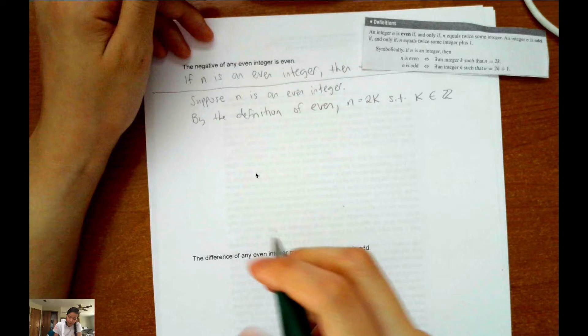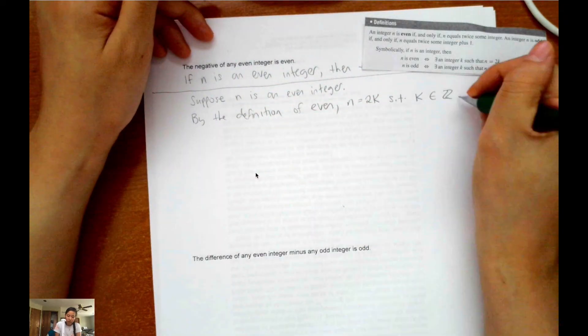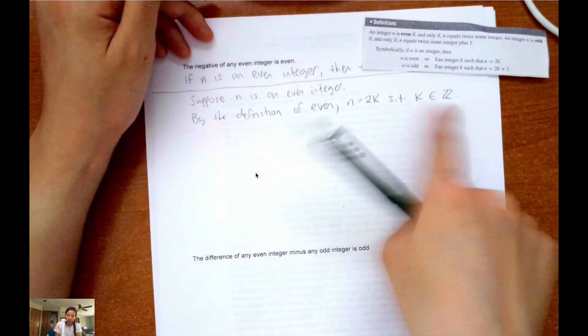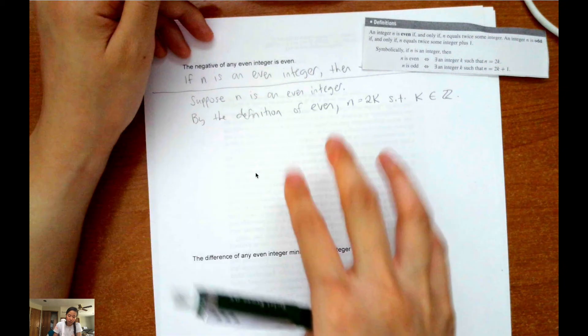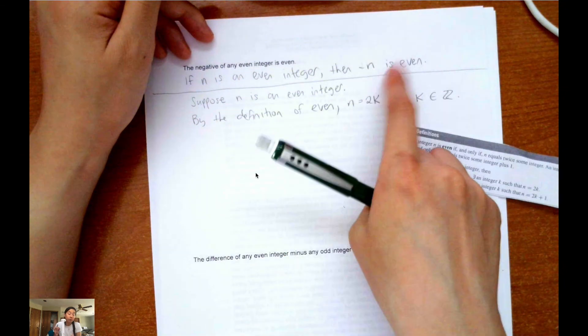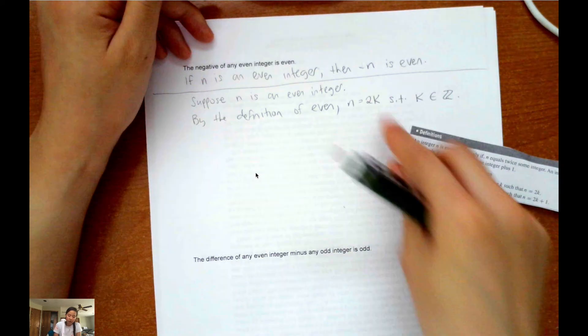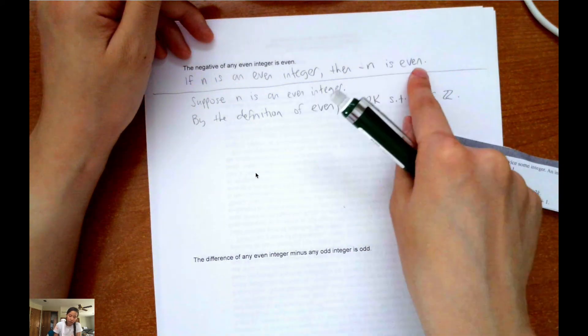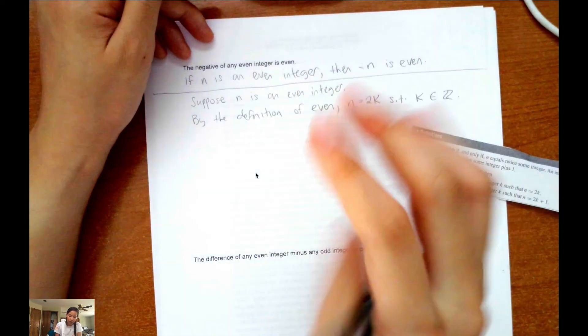So yeah, that's the next sentence. And we're going to use this sentence, this definition, again later on in the proof, because we're trying to prove that negative n is even. That's what we're really trying to prove. We're trying to prove that negative n is even when n is an even integer. So we'll show that negative n is even by referring to this definition right here.